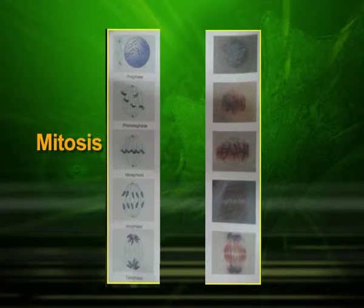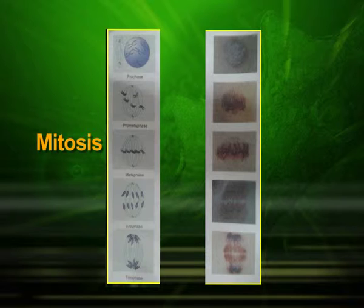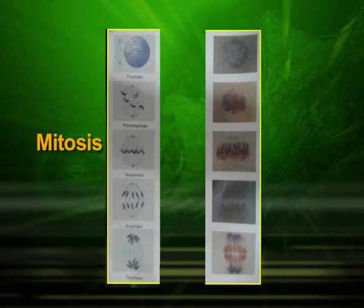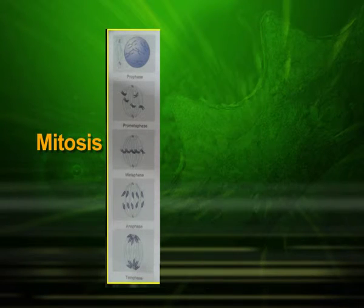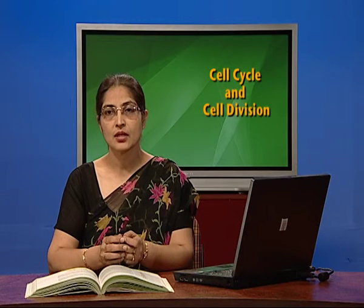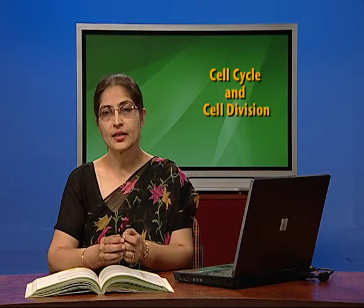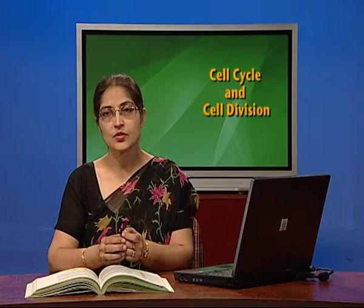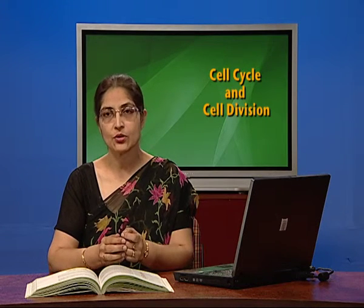Look at another picture of mitosis as seen in a plant cell. This picture shows the images of mitosis as seen in actual cells on the right hand side and their diagrammatic representation on the left hand side. Students, you must practice drawing labeled diagrams of all the stages of mitosis.